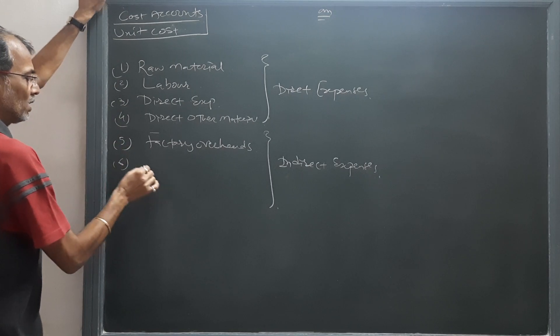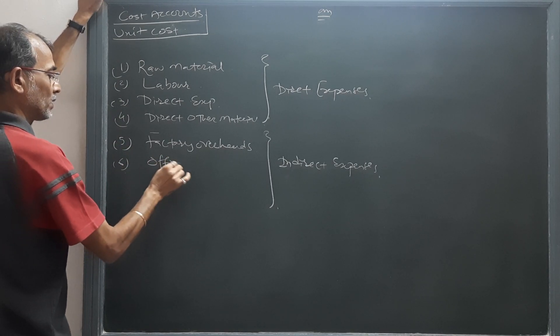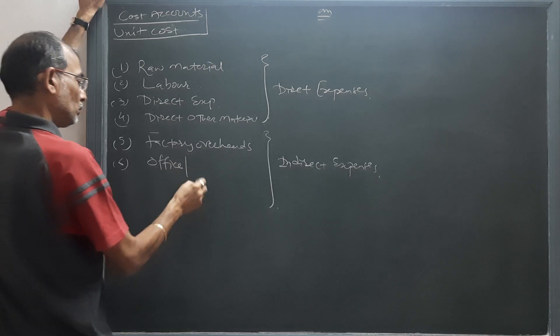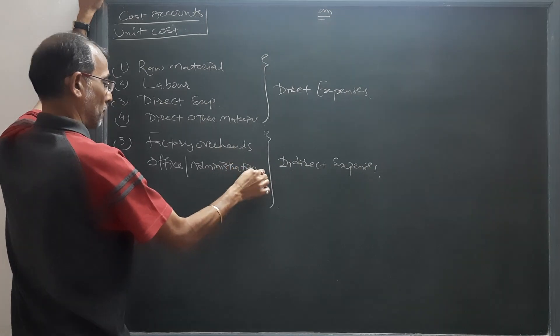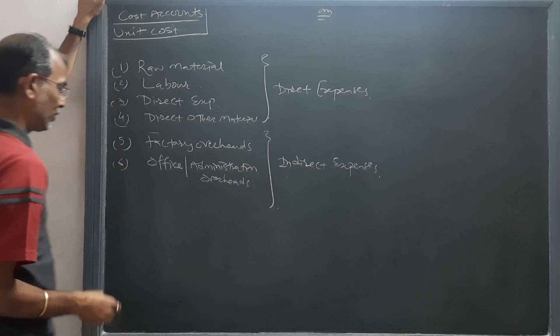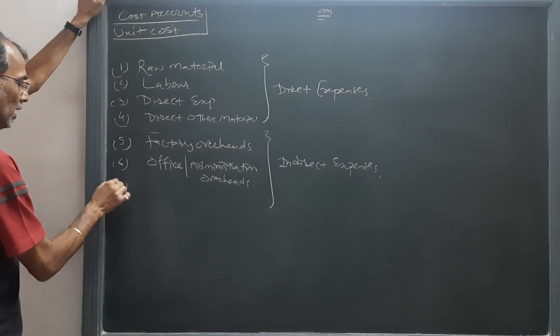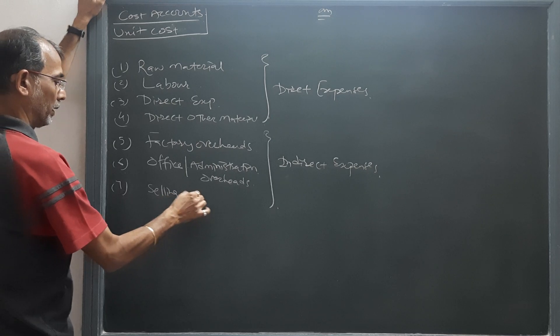Sixth comes office or administration overhead, and seventh comes selling and distribution overhead.